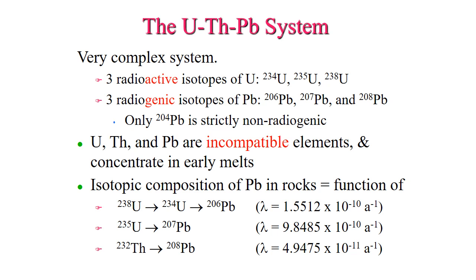Our final system is the uranium-thorium-lead system. This is a very complex system, though one of the most widely used isotopic systems for dating igneous and metamorphic rocks. Uranium has three radioactive isotopes: uranium-234, -235, and -238. Lead has three radiogenic isotopes: lead-206, -207, and -208. Thorium has multiple radioactive and radiogenic isotopes, with the main ones being thorium-232, -234, and -230. All these elements are incompatible in the mantle and concentrate in the melts early, and therefore will be concentrated in the crust. Dating rocks with this system requires a mineral with a high thorium and uranium content and a very low lead content, so that any lead present can be assumed to result from radioactive decay.